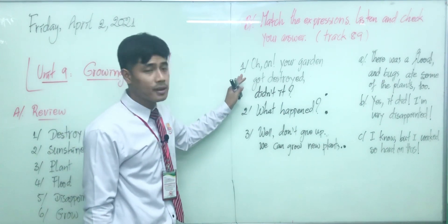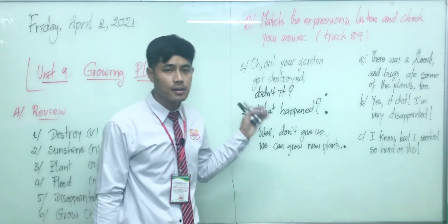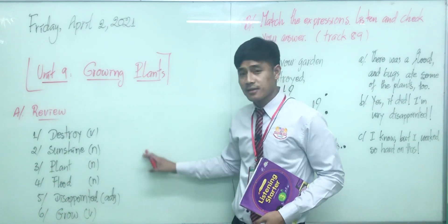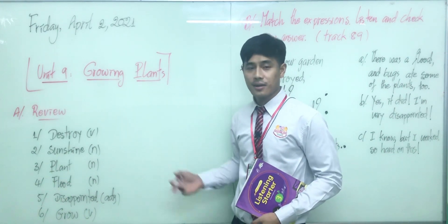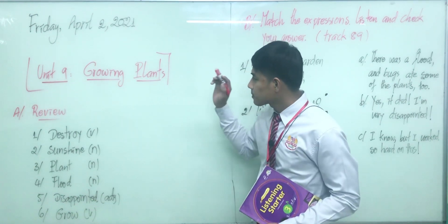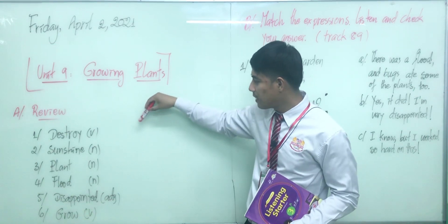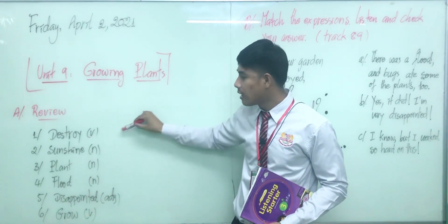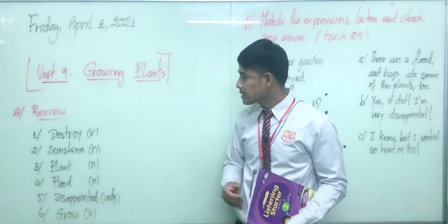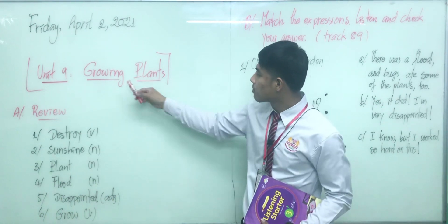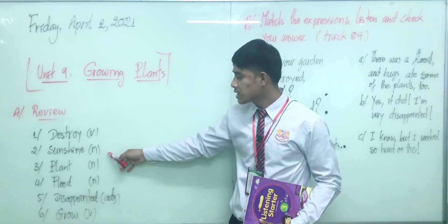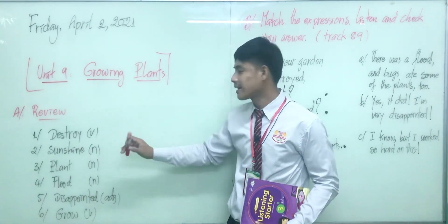You can also see this exercise on page 58. Do you still remember all of these vocabulary words and their meanings? Let me explain briefly about the definition and how to pronounce each word. Let's get started now — Unit 9: Growing Plants review.